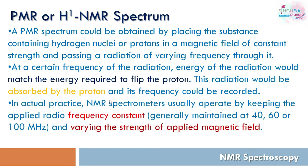In actual practice, the NMR spectrometer operates by keeping the radio frequency constant and changing the applied magnetic field strength. So we have two cases: the principle method uses varying frequency with constant magnetic field, while the actual instrument uses constant frequency with varying field. Both methods allow us to record the HNMR spectrum.